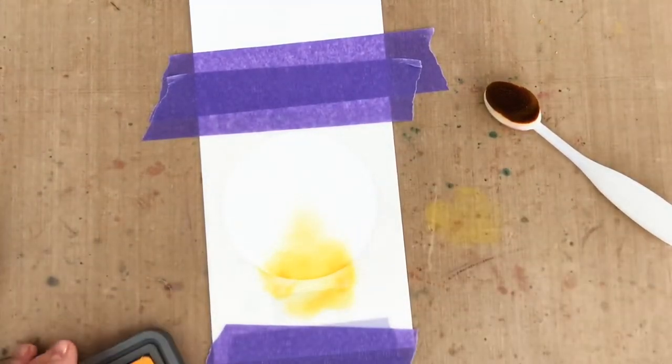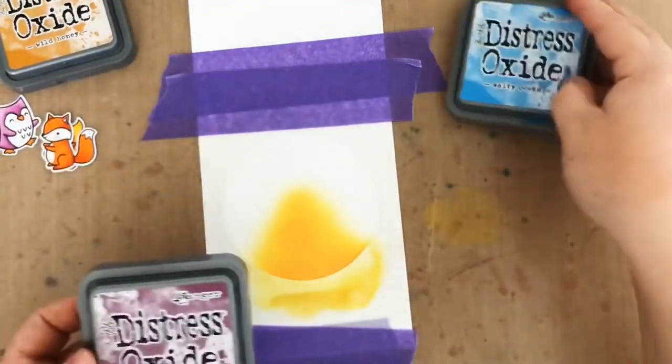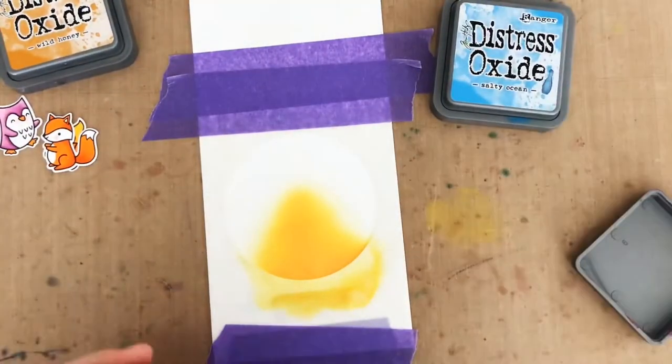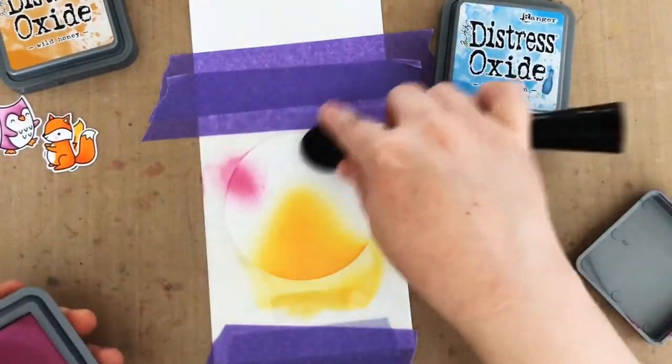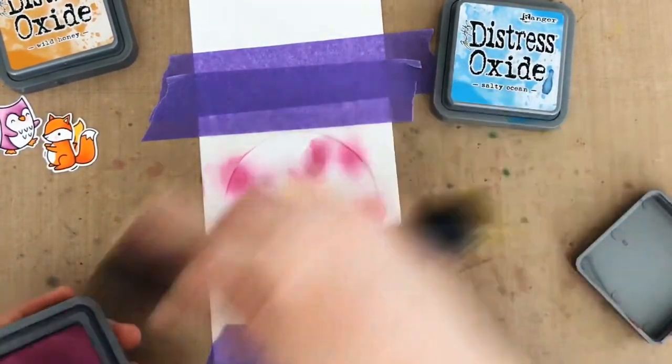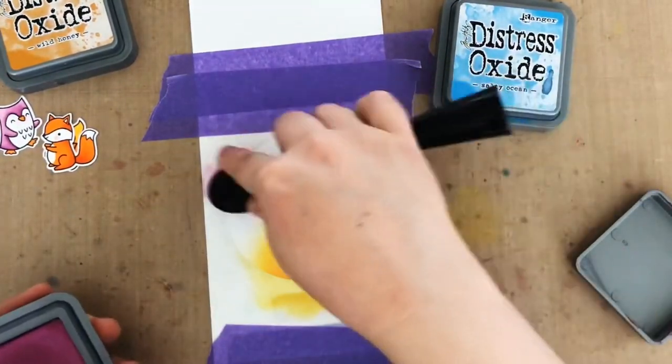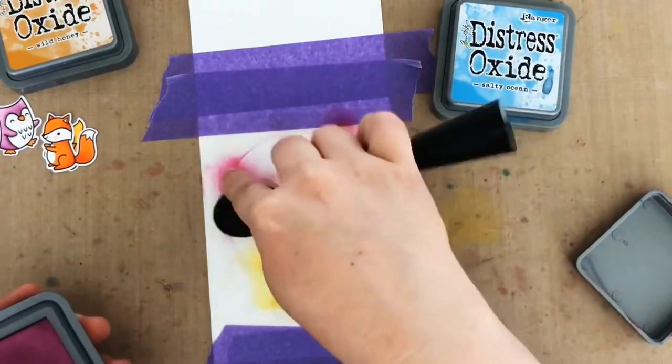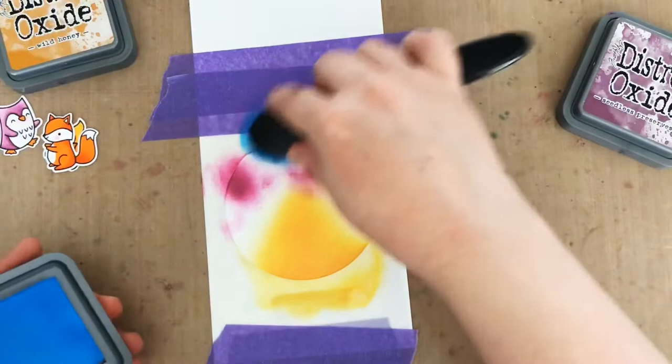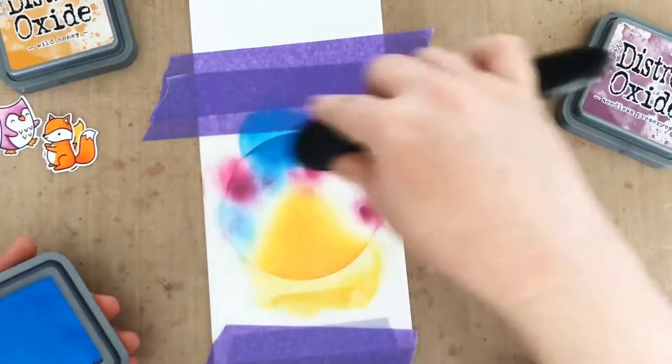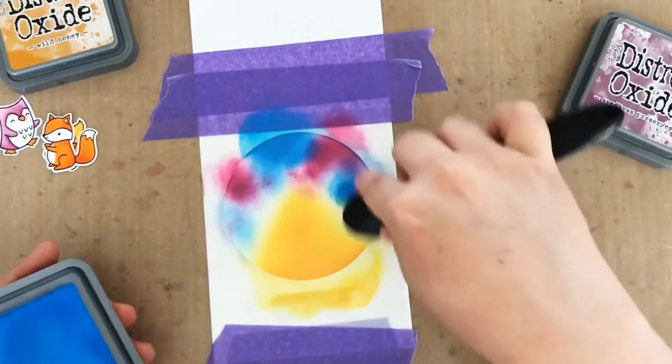Now after I've perfected my little firelight glow, I'm going to add some other colors to add some depth to the night sky that I'm going to create. So I've just got a little bit of Seedless Preserves, and then a little bit of Salty Ocean, and I'm just applying them in no particular way. I just want a little bit of color that's going to go underneath my darkest blue to create my sky.